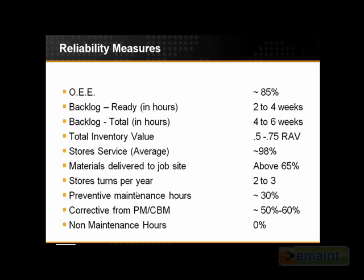From that preventative work, you should generate 50% to 60% of your workload as corrective work from PM. Non-maintenance hours should be about zero. I've seen operations that have their maintenance people doing snow removal, grass cutting, and cleanup after events. I'm not saying you shouldn't do that, but you should budget for those things, make it a maintenance function, and provide the resources to get it done — too many times those tasks are thrown in on top of maintenance budgets that had no provisions for them.